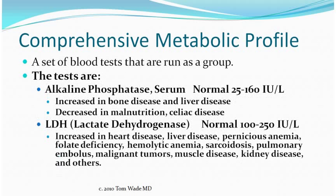The alkaline phosphatase can be increased in bone disease and liver disease, and decreased in malnutrition and celiac disease. The LDH, lactate dehydrogenase, can be increased in a number of diseases, including heart disease, liver disease, pernicious anemia, hemolytic anemia, folate deficiency, sarcoidosis, pulmonary embolus, malignant tumors, muscle disease, kidney disease, and others.